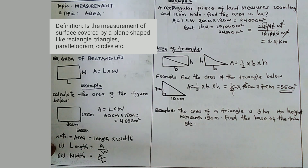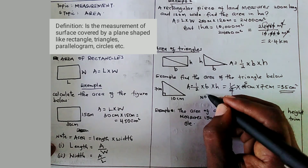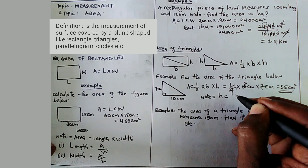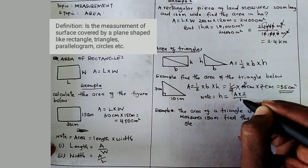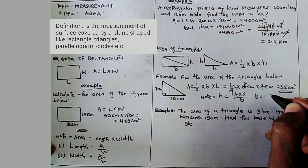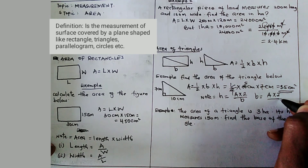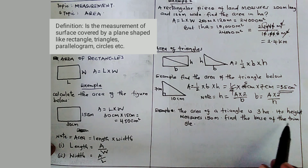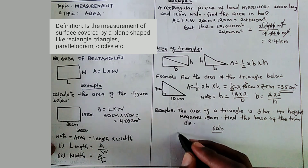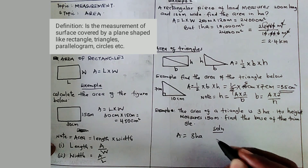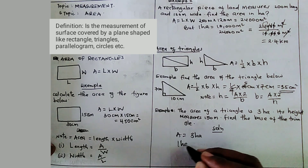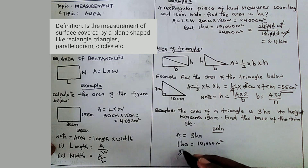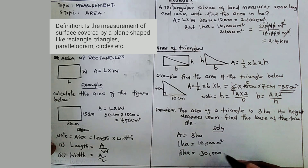Before example 2, note this: when you are asked for the height and given the area, height equals area times 2 over base. And base equals area times 2 over height. Example: the area of a triangle is 3 hectares and its height measures 150 meters. Find the base. Solution: convert 3 hectares to meter square — 1 hectare equals 10,000 meter square, so 3 hectares equals 3 times 10,000, which is 30,000 meter square.